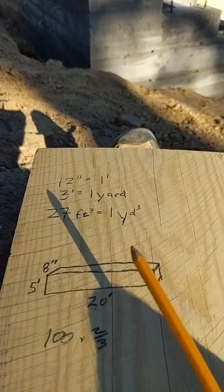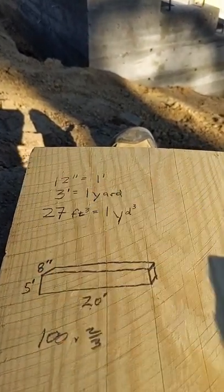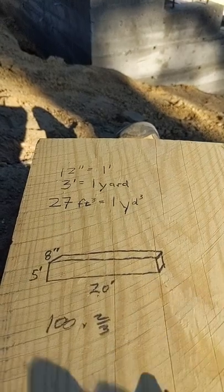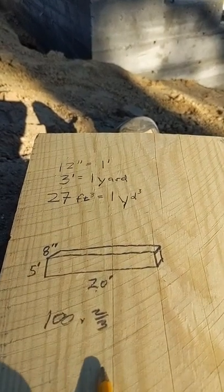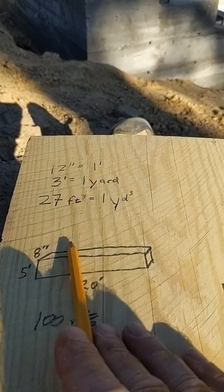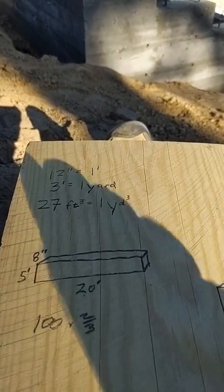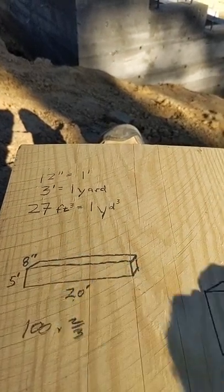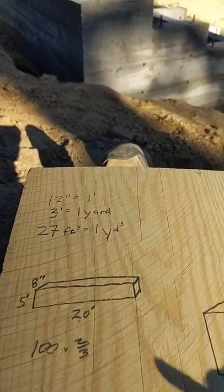First convert that 8 inches into feet. 8 divided by 12 is 2 thirds. And then 20 times 5 is 100 times 2 thirds. About 67 cubic feet divided by 27 will give you 2 and a half cubic yards. So that little piece will be 2 and a half cubic yards.